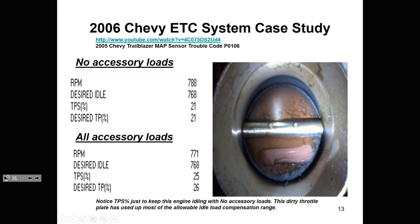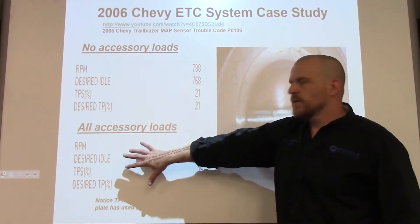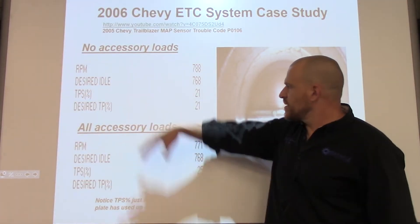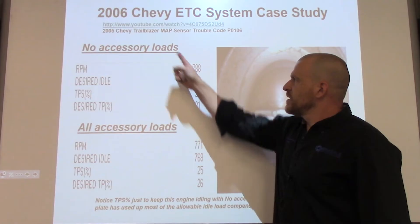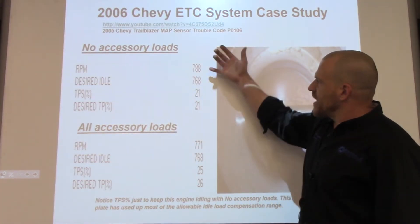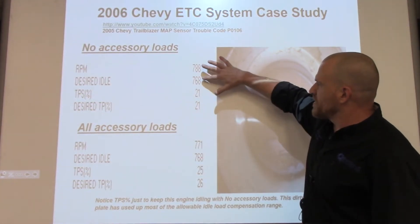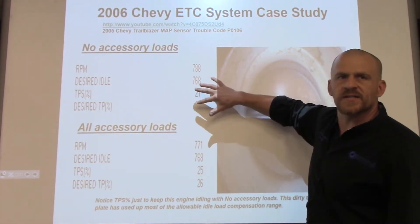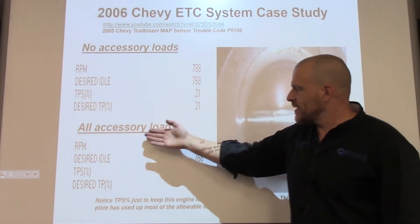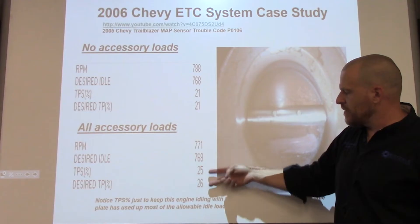Next page — dirty throttle body. No accessory loads on, all accessory loads on. Look at the numbers: 21% throttle with no accessory loads. My desired RPM is 7.68 and actual is 7.88 — RPM and desired look pretty good — but it took 21% to get there. With all accessory loads on, it's at 25%.